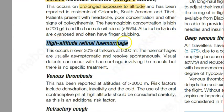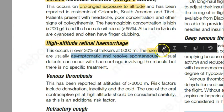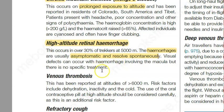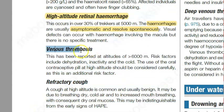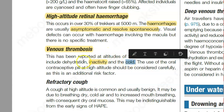Then you have high altitude retinal hemorrhage, which occurs in 30 percent of people — hemorrhage in the retina. These are asymptomatic and they will go away, so that is fine. And then venous thrombosis — especially if there is inactivity, there can be vein thrombosis. Cold and dehydration can also lead to thrombosis.